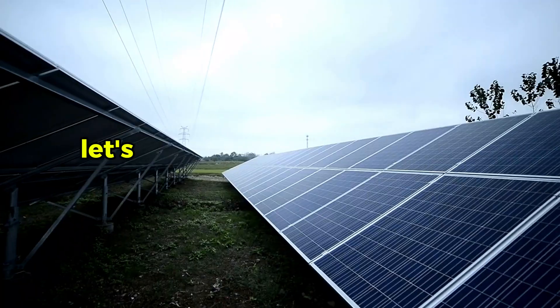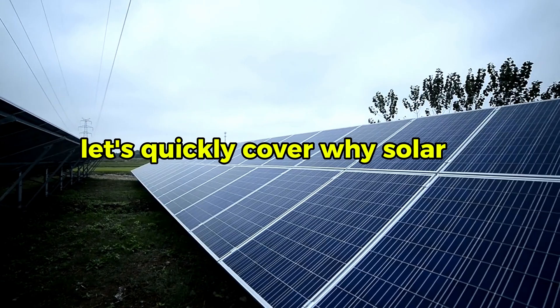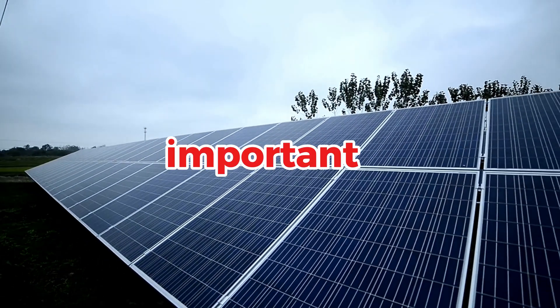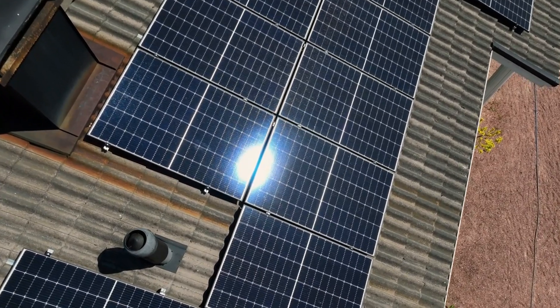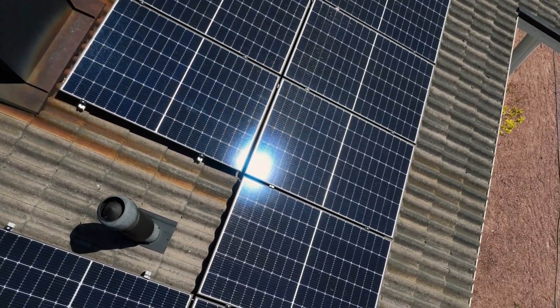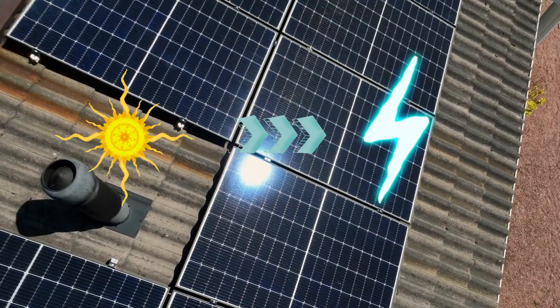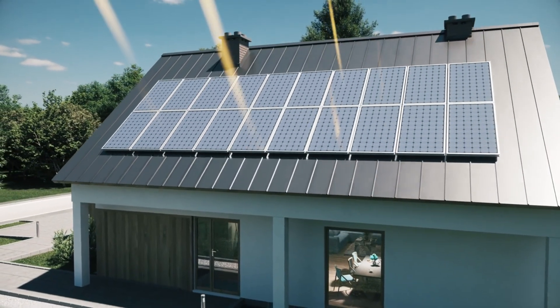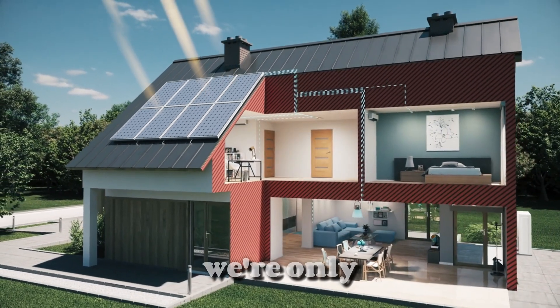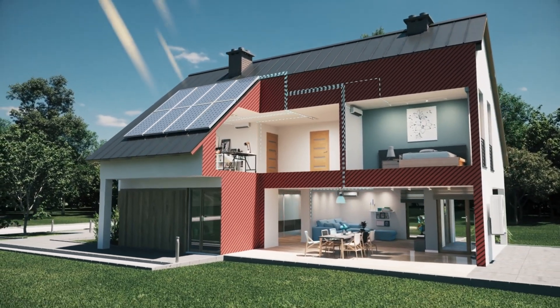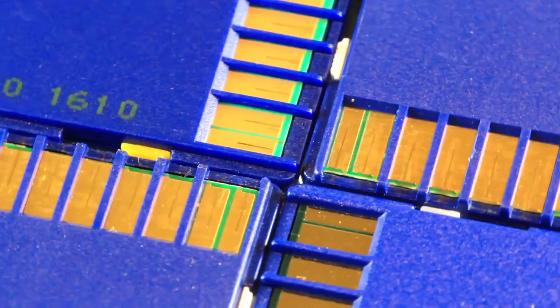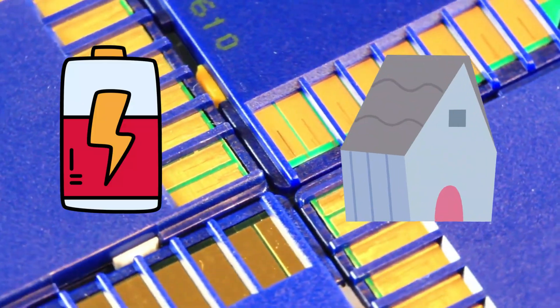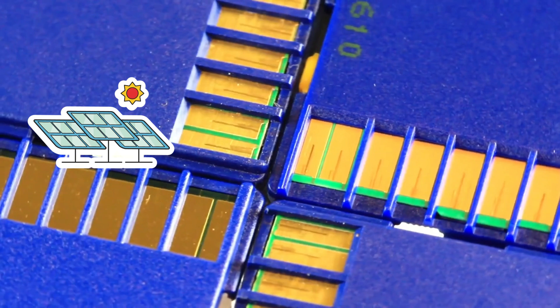Before we get into the breakthrough, let's quickly cover why solar efficiency is so important. Traditional solar panels, like the ones on rooftops, convert about 15 to 22 percent of sunlight into electricity. That means for every 100 units of sunlight, we're only using 15 to 22 units. The rest, gone. Now imagine if we could double that. More electricity, less space, fewer panels, lower costs.